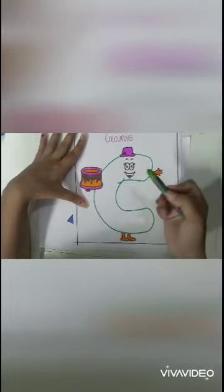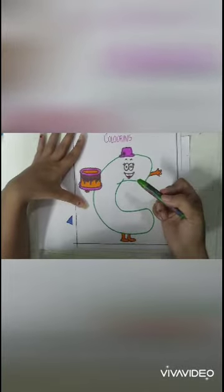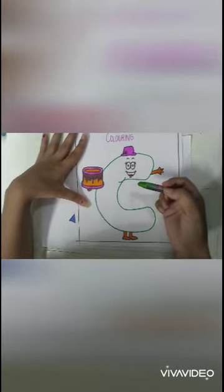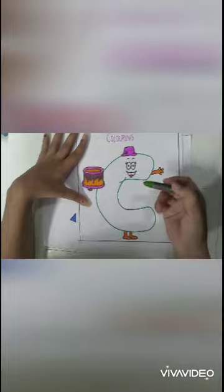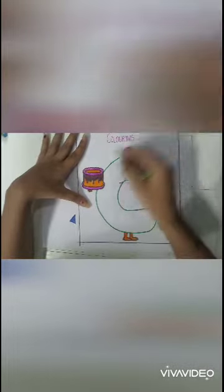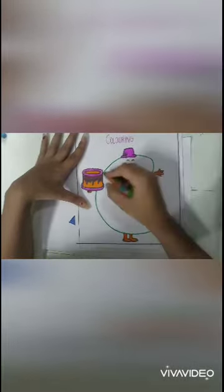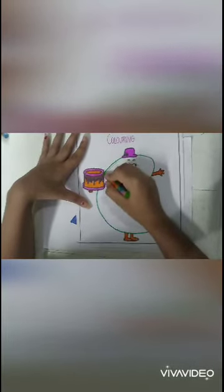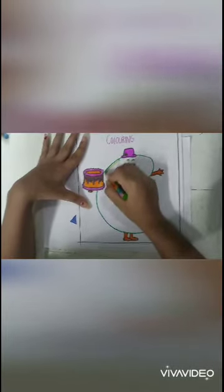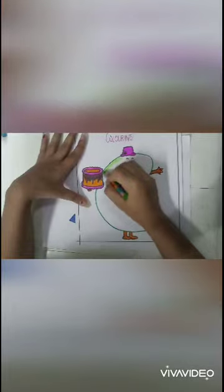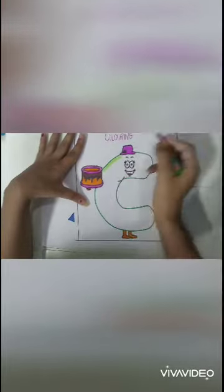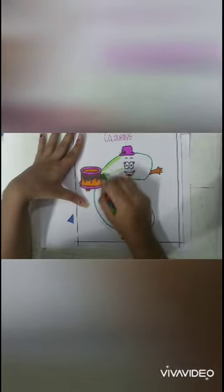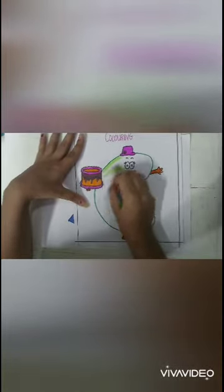So what you will do — first you will do the outline. First tell me, which color is this? This is green color. So what you will do — first you will do the outline like this, and then you will fill it in between: right, left, right, left.